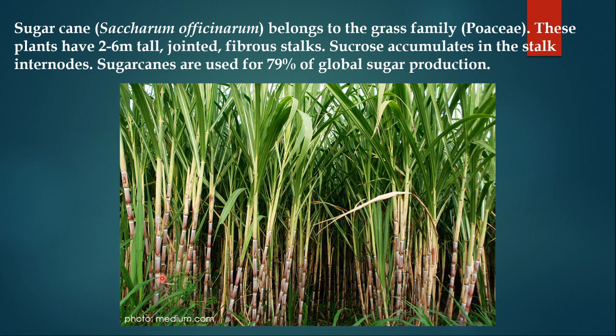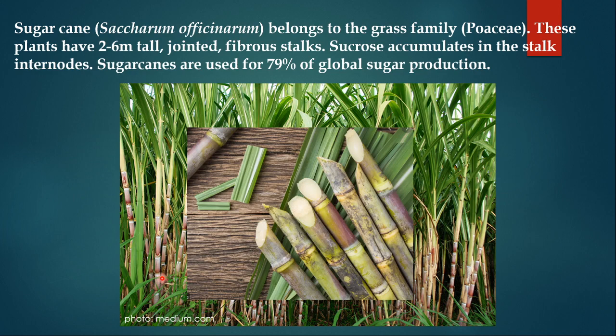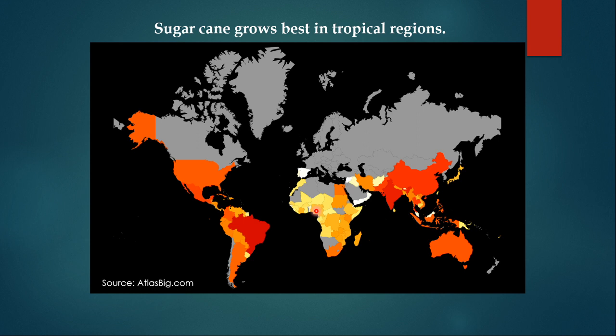Sugarcane is one of the most important crops worldwide. The scientific name of sugarcane is Saccharum officinarum. It belongs to the grass family, Graminae or Poaceae. The plants grow up to 2 to 6 meters, and in the internodes of the stem, sucrose is accumulated. This sucrose is extracted for sugar production. Sugarcane is used for 79% of global sugar production.